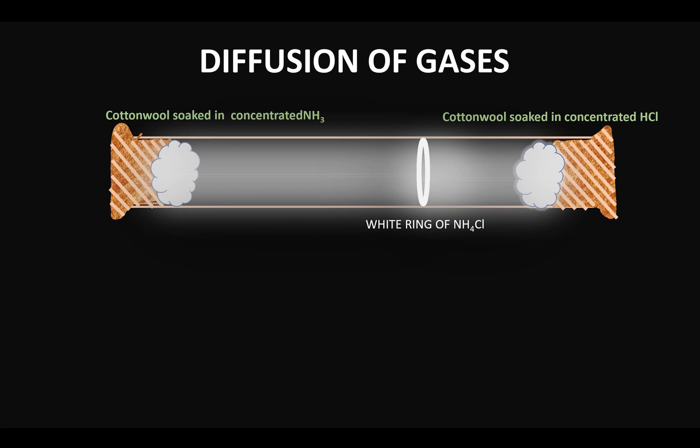as to what has led to the formation of this white ring of ammonium chloride. Now the second question still remains: why is the ring formed towards the cotton wool that is soaked in concentrated hydrochloric acid and not towards the other side where there is a cotton wool soaked in ammonia?